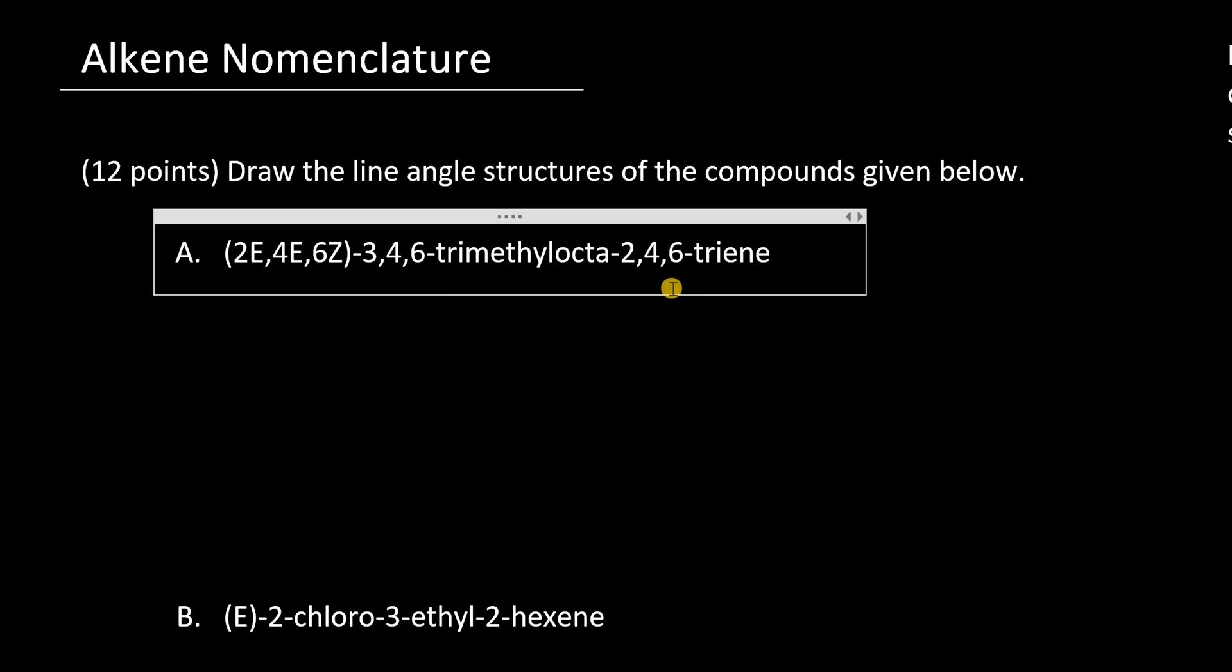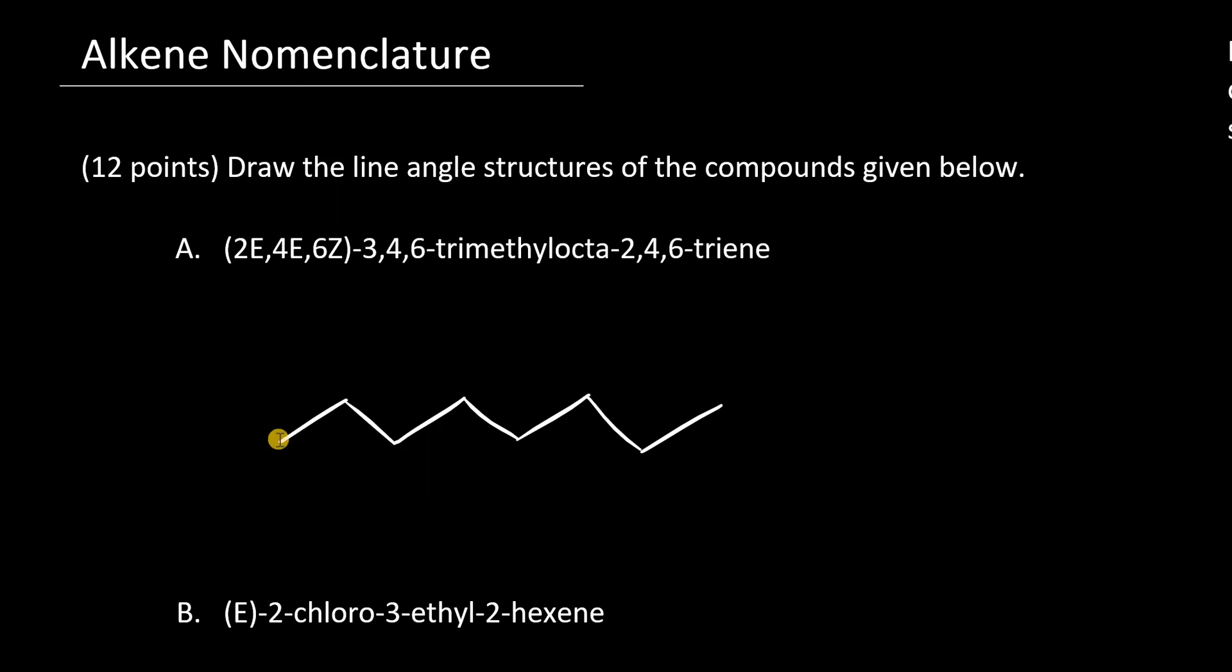So here we have an octatriene, so we should draw that in first. So if I call this carbon 1 right here, and this carbon out here, number 8, I should have a double bond between carbon 2 and 3, 4 and 5, and between 6 and 7.